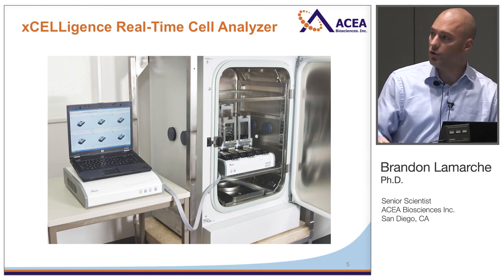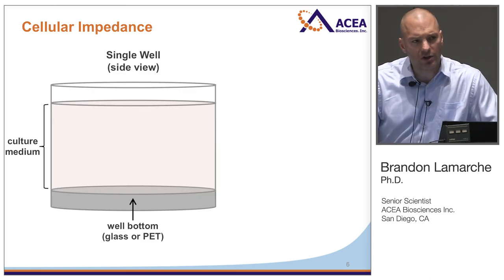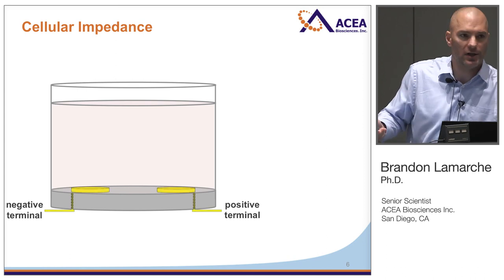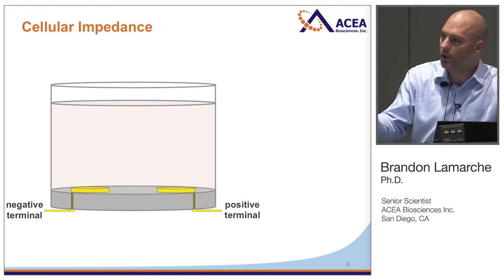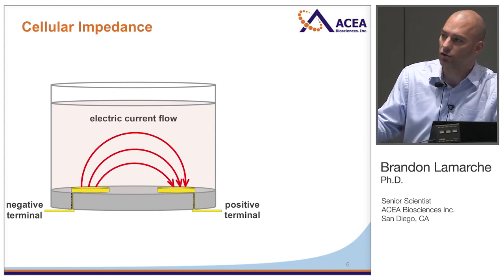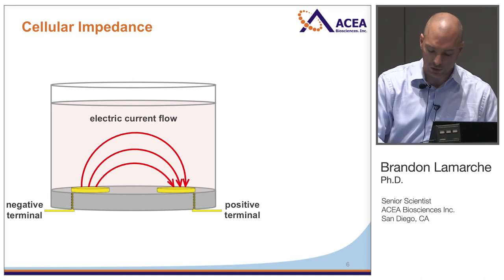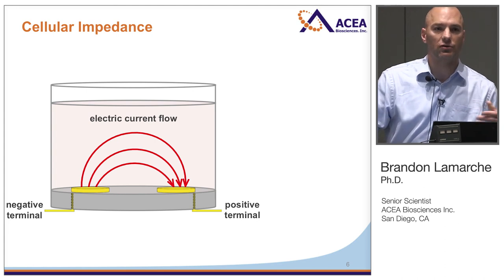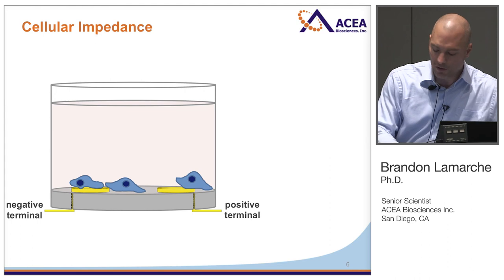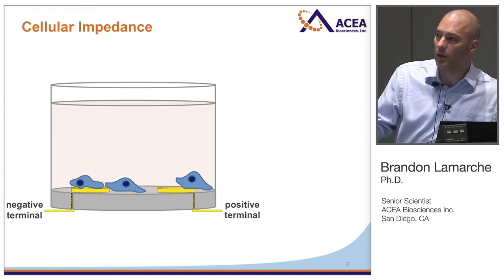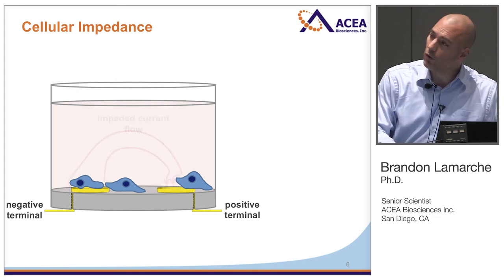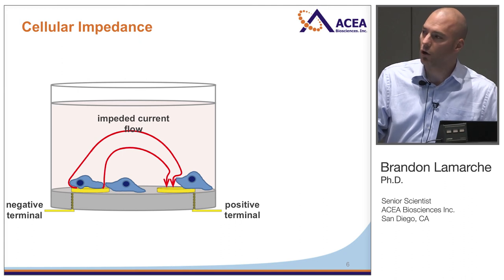The instrument interfaces with a computer where you program your experiment, acquires data in real time, and you do your analysis there as well. To understand what Excelligence is monitoring, zoom into a single well: the well is immersed in media with gold electrodes integrated into the bottom. When the plate is inside the Excelligence instrument, a very weak electric potential is applied across the bottom, causing a current to flow from one electrode to the next — electrons hopping through bulk solution. This background measurement is made in the absence of cells. Once cells are added and deposited onto the bottom, they take up surface area on those electrodes; cells conduct electricity much more poorly than the surrounding medium, causing an inherent resistance or impedance to current flow.